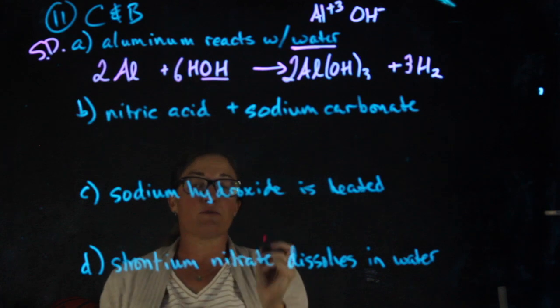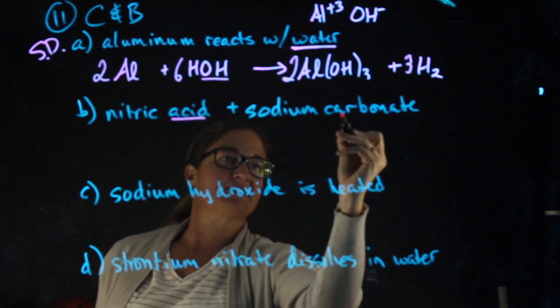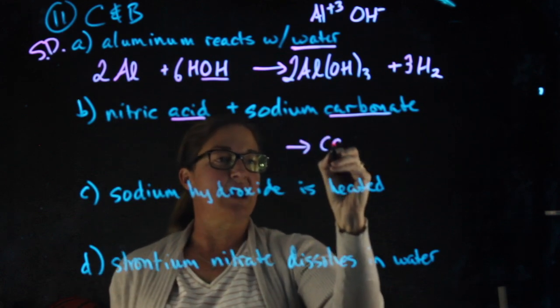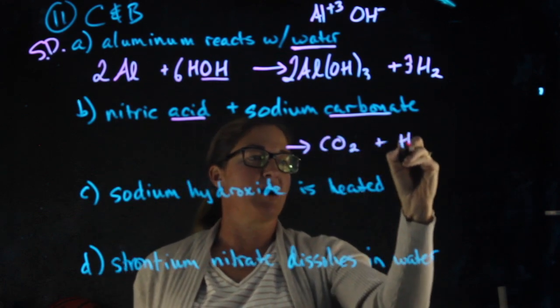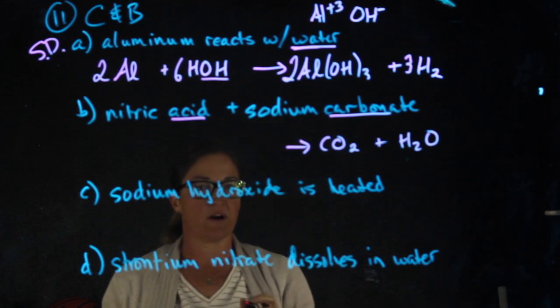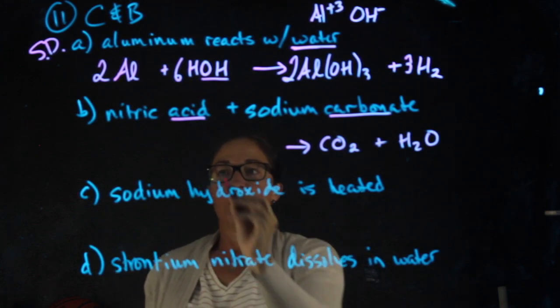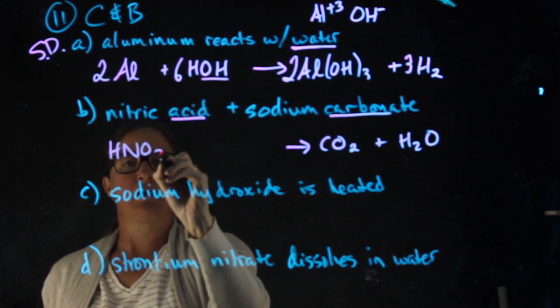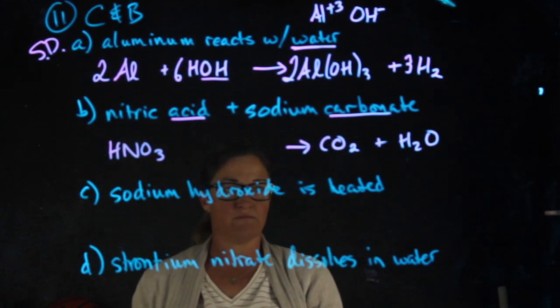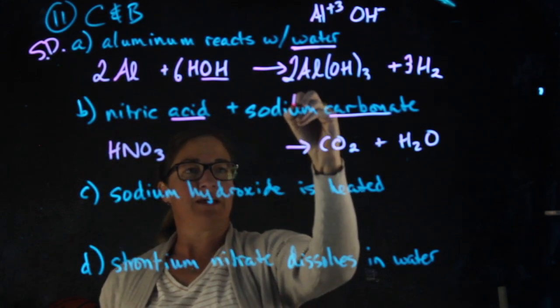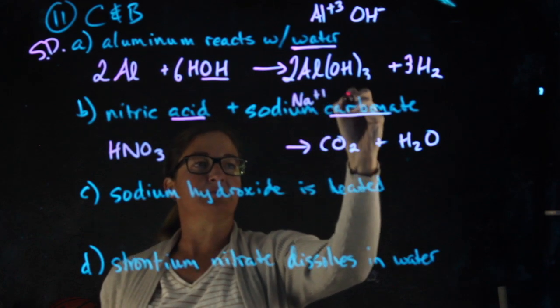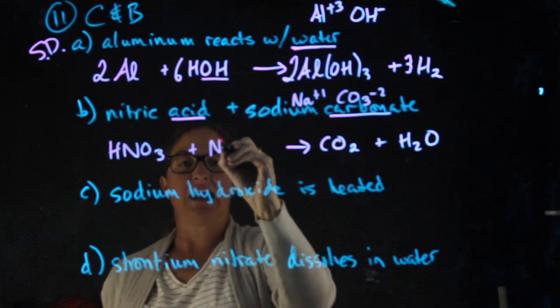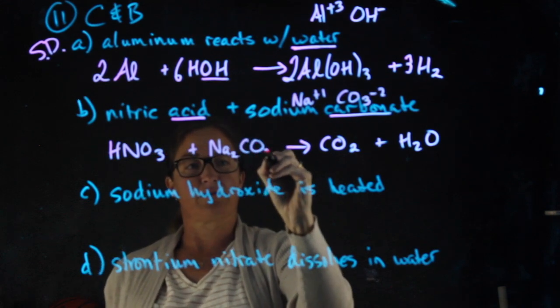The second reaction is an acid carbonate reaction. When I have an acid carbonate reaction, I automatically know that two of my products are carbon dioxide and water. Nitric acid is HNO3, hydrogen with nitrate. Sodium carbonate, sodium is a plus one, carbonate is a minus two. Sodium carbonate is Na2CO3.